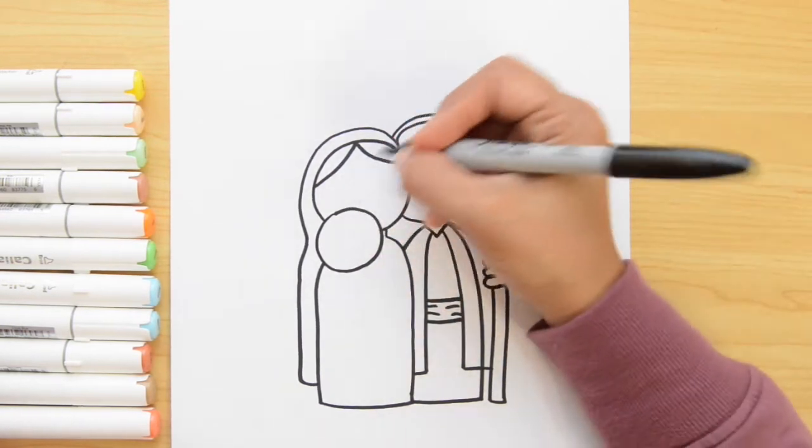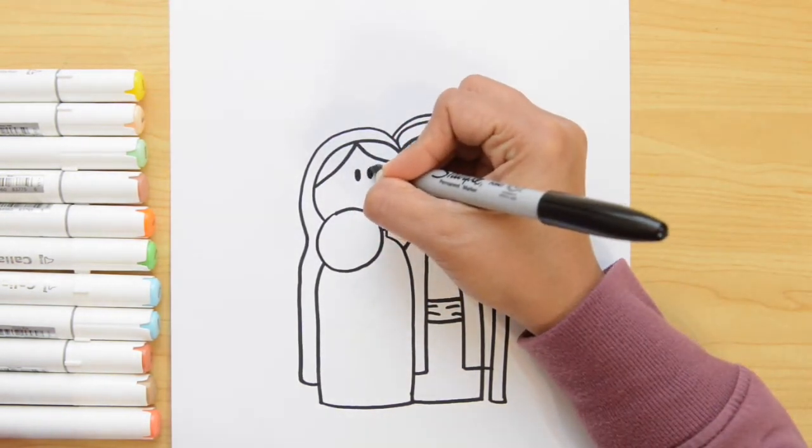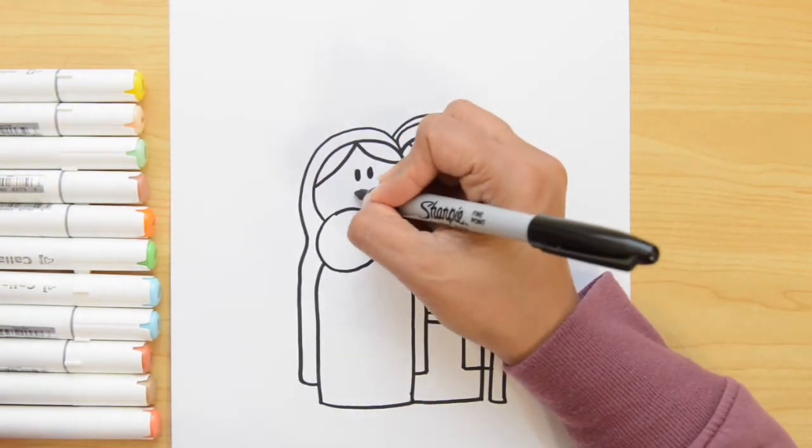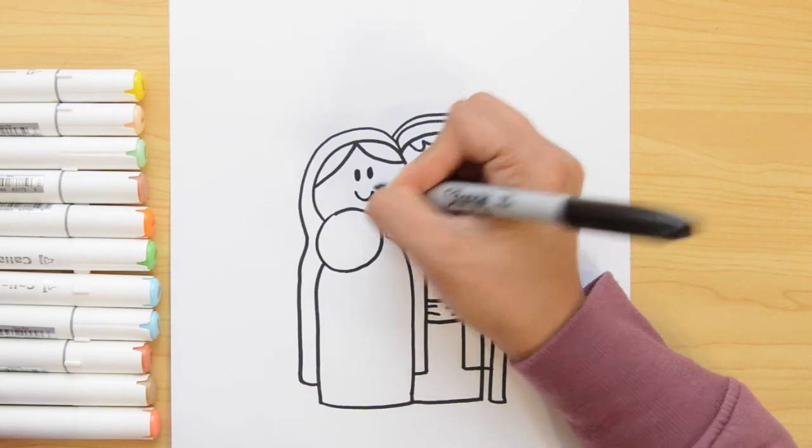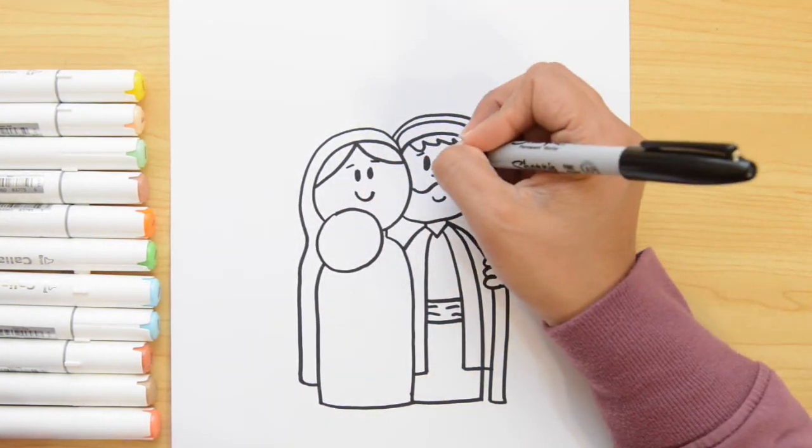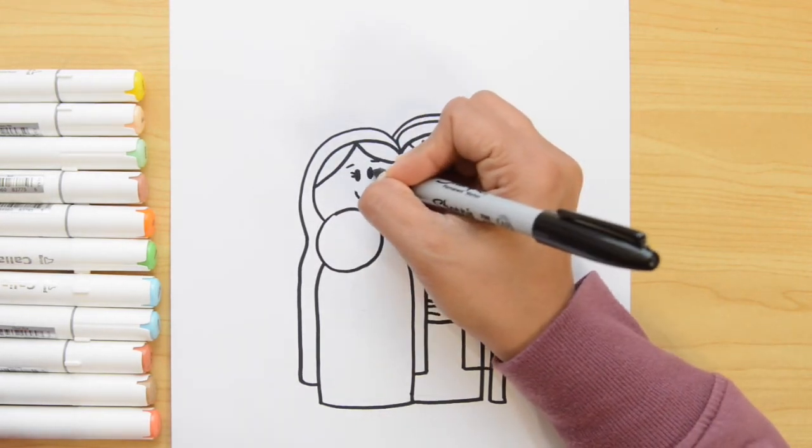Now let's do Mary's eyes. And it's gonna be the same. Two oval shapes. We're filling them with black. The smile. Let's put a little bit of a smile here. And I'm gonna put eyebrows. Let's put eyebrows in Joseph too. And let's not forget about the eyelashes. Two little lines.